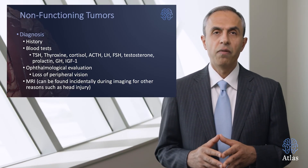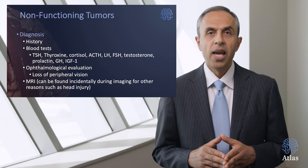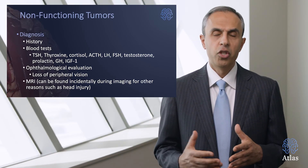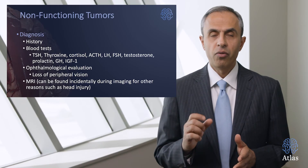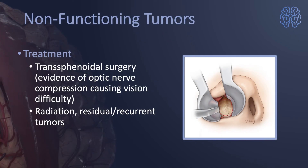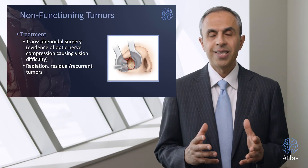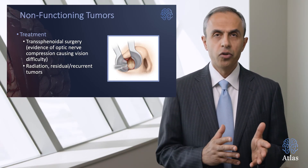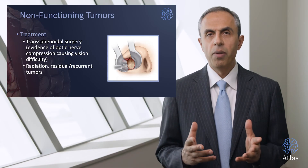Ophthalmological evaluation is critical for larger tumors to measure loss of peripheral vision and assess how much recovery can be achieved after surgery. Most often these tumors are found incidentally on MRI done for other reasons such as head injury. If the tumors are relatively small, asymptomatic, and not producing hormones, they can be observed. For moderate-sized tumors not causing symptoms, we still recommend surgery in younger patients to avoid future vision loss, as these tumors can grow about one to two millimeters per year.